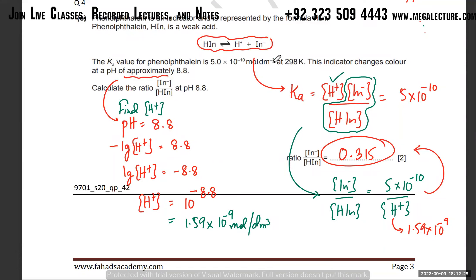Remember, the same expression: products over reactants. The Ka value was given, and H⁺ concentration was figured out using pH. That's all you needed.